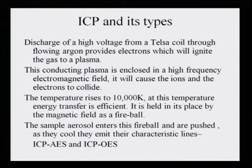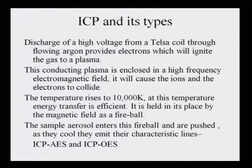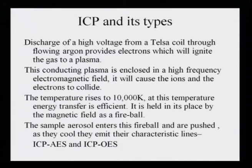Discharge of high voltage from a Tesla coil through flowing argon provides electrons which ignite the gas to a plasma. This conducting plasma is enclosed in a high-frequency electromagnetic field, which causes ions and electrons to collide. The temperature rises to 10,000 Kelvin. At this temperature, energy transfer is efficient. It is held in its place by the magnetic field as a fireball. The sample aerosol enters this fireball and as they cool, they emit their characteristic lines.